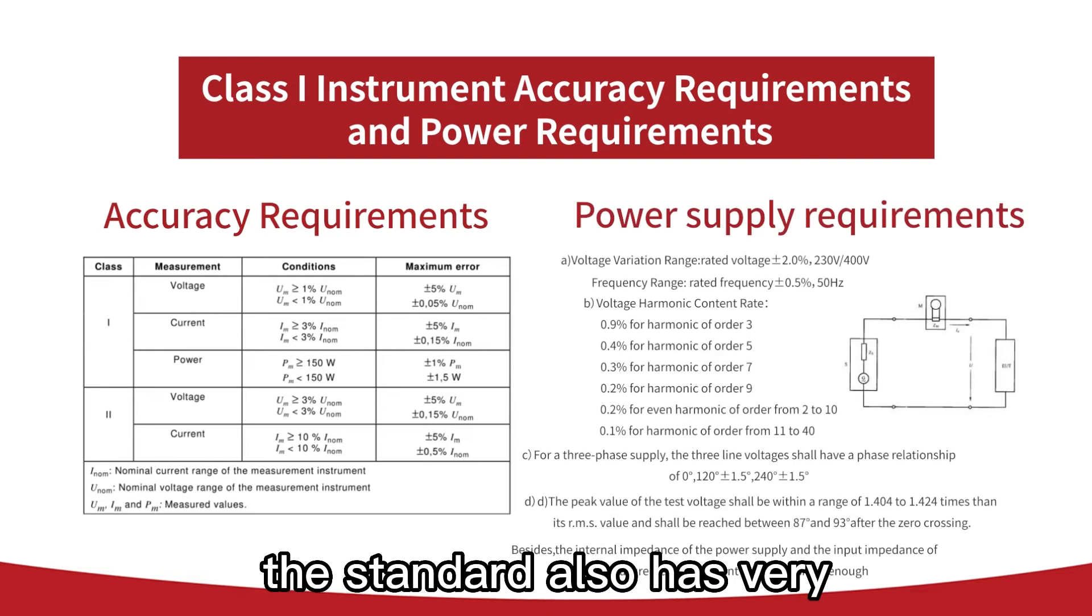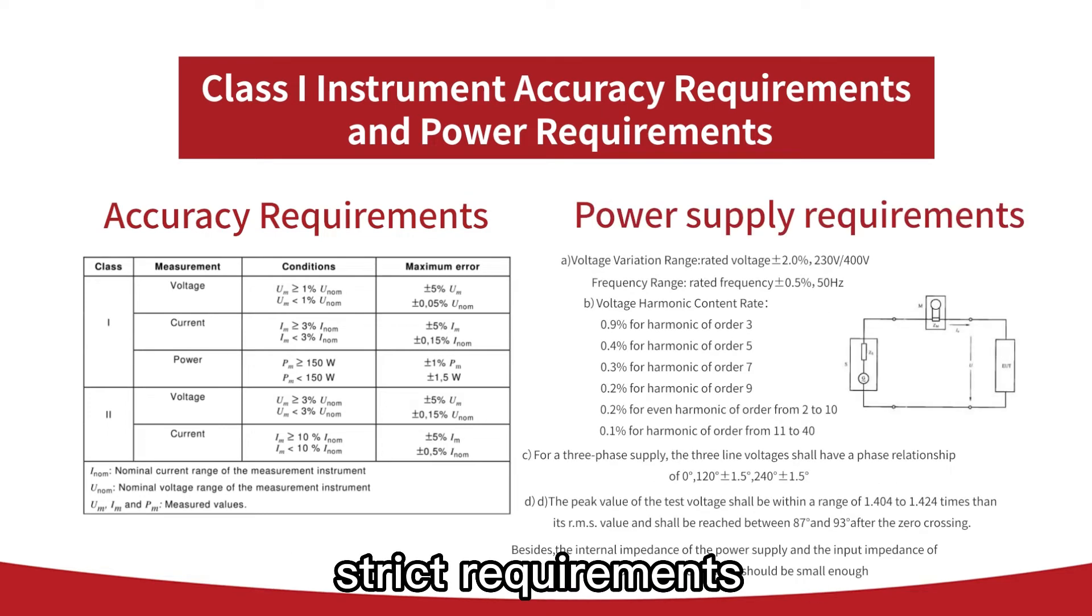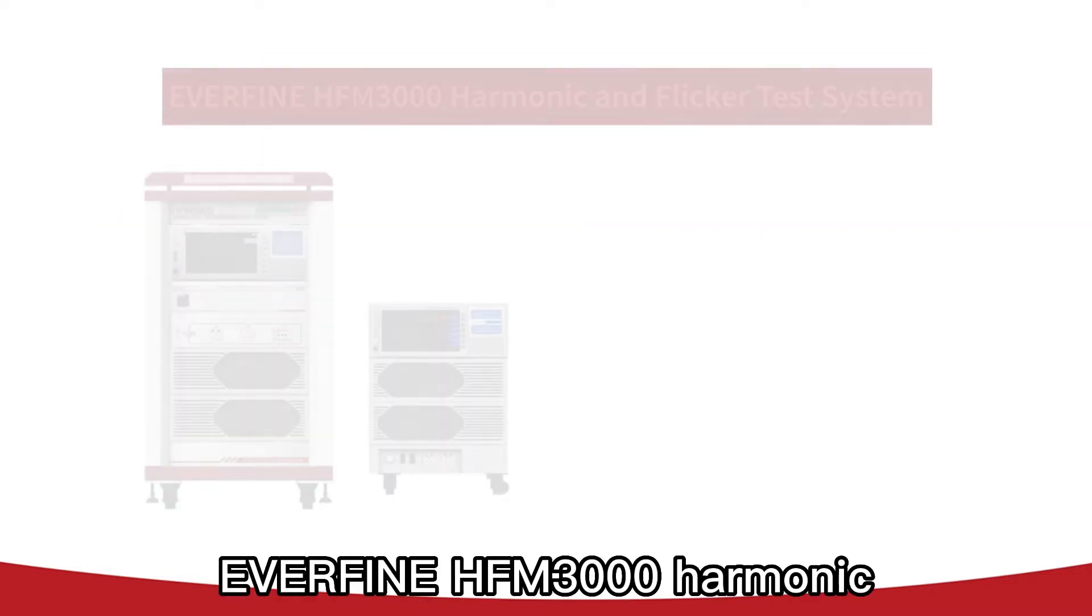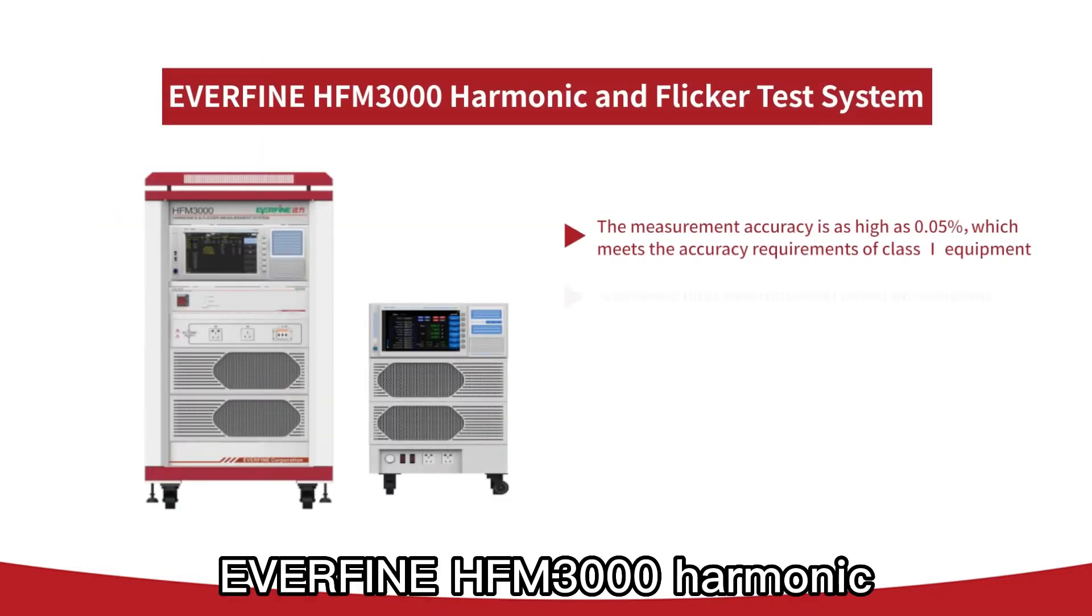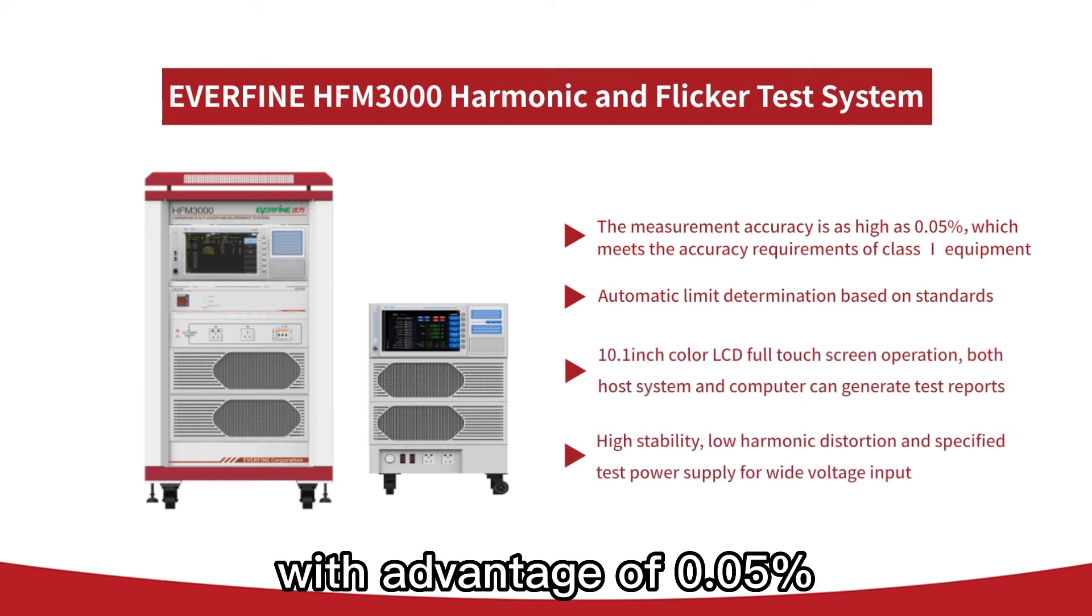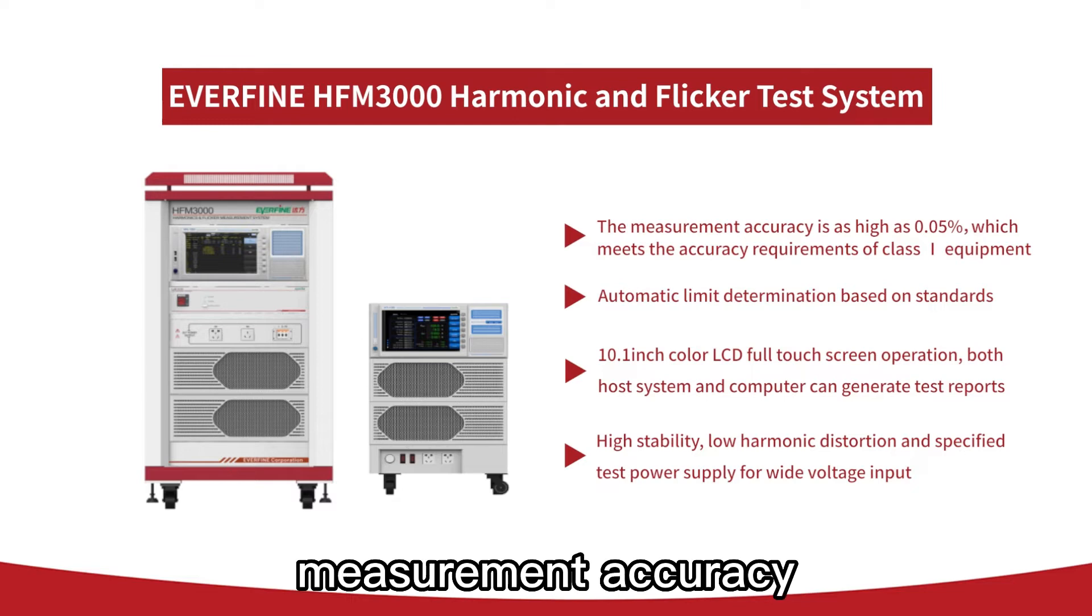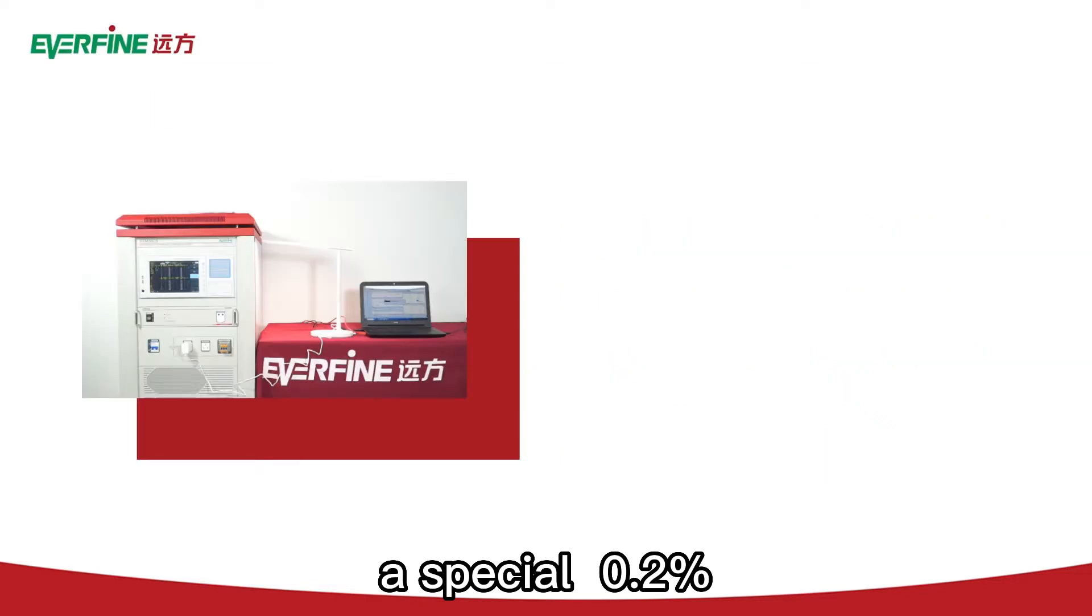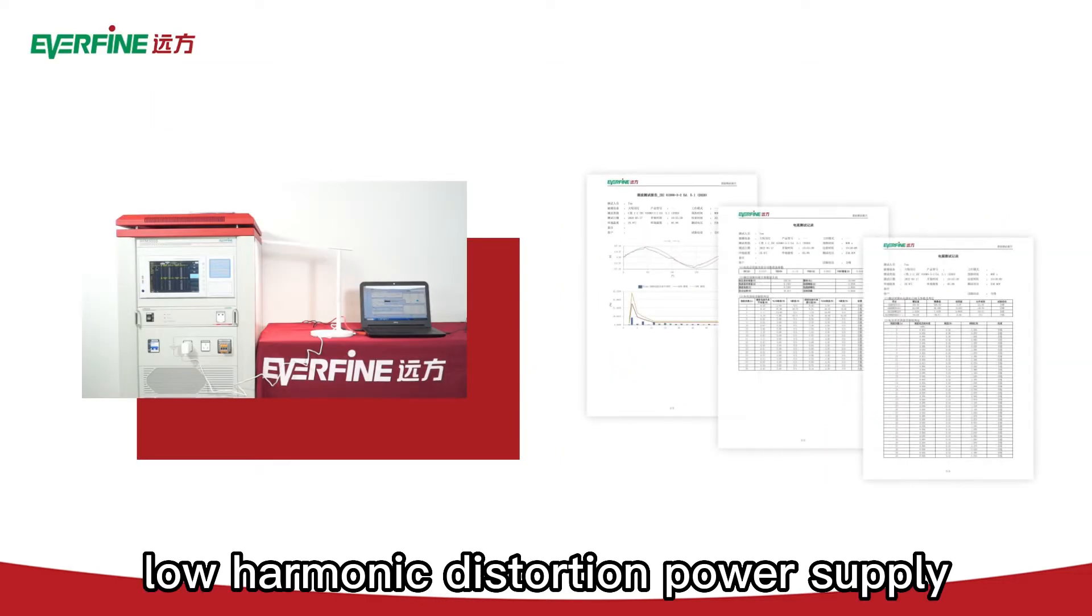At the same time, the standard also has various strict requirements for the power supply. Itech's HFM3000 harmonic and flicker test system is a kind of certified measurement solution with the advantage of 0.05% measurement accuracy, 0.1 mAh high resolution, and a special 0.2% low harmonic distortion power supply.